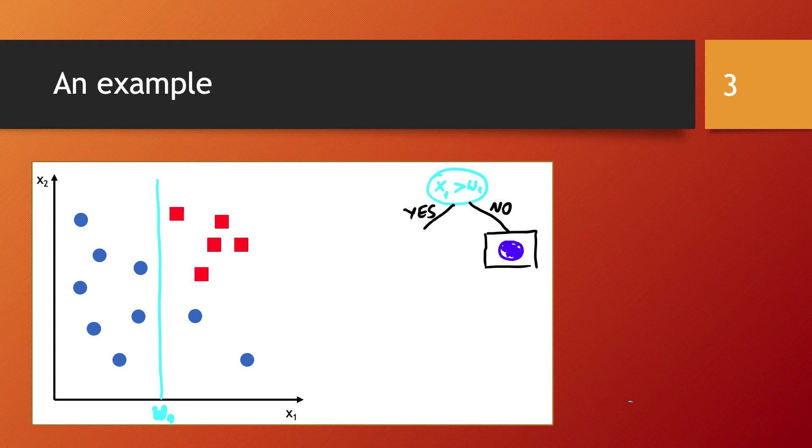We can then continue and take another look at another decision. For example, we can check this X2 dimension and check whether this X2 dimension is larger than some threshold value W2. So in the case where the answer to the previous question was yes, we continue our decisions to make. And in this case, we are going to look at whether X2 is larger than some threshold value W2.